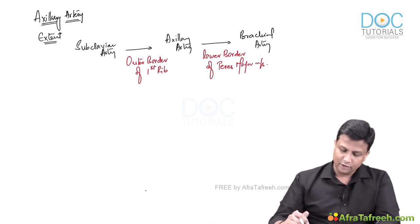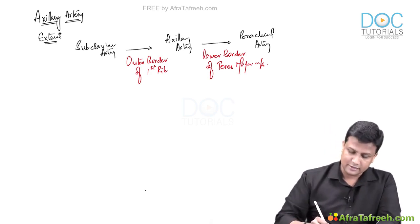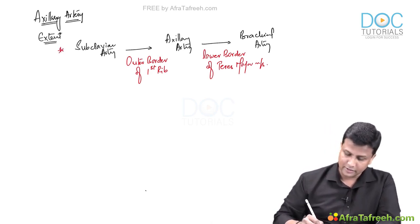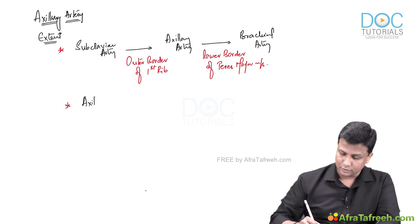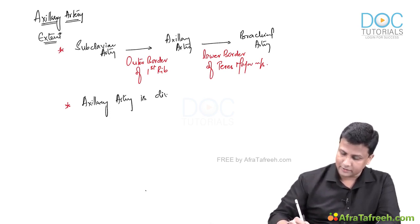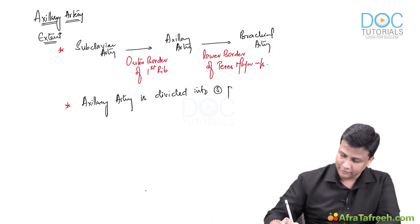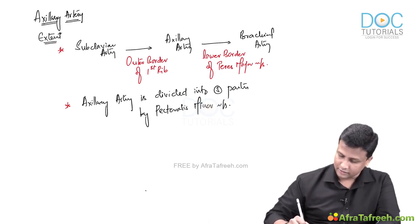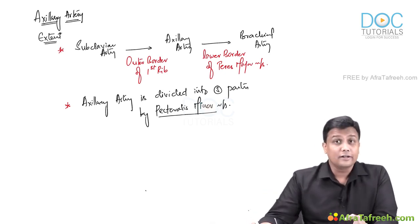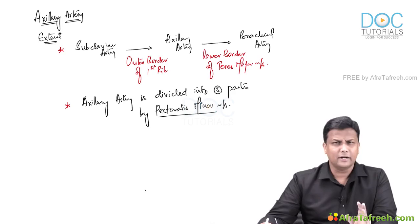Now the second important point: the axillary artery is divided into three parts by the pectoralis minor muscle. Be very careful with minor and major wherever it appears — it can be a point of confusion in exams. The axillary artery is divided into three parts by the pectoralis minor muscle.